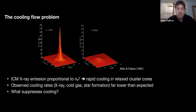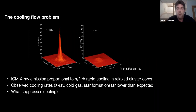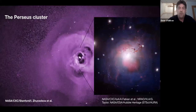One can estimate, based on the X-ray emission, the cooling rates and therefore the amount of material expected to cool out of the hot intracluster medium to form cold gas or even stars. What was found was that those amounts of star formation and cold gas were far lower than expected based on the cooling rates measured in the X-ray. So there was this question of what suppressed cooling — and of course the answer is AGN feedback.